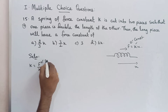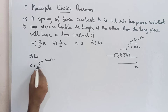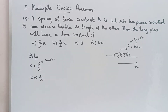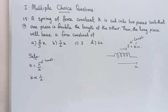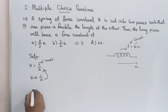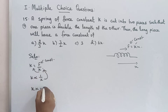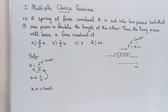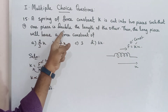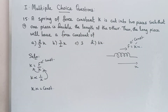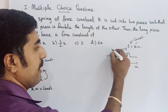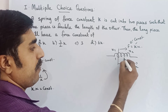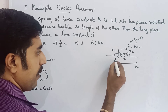If we apply a constant force, K is proportional to 1 by X. So as spring length X increases, the spring constant K is inversely proportional to the length. One piece is double the length of the other. So this is first piece x1 and second piece x2 - giving a total of three parts, where one part is x1 and two parts is x2.